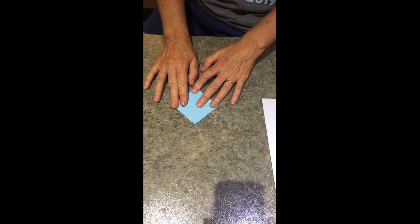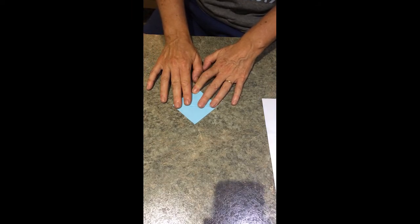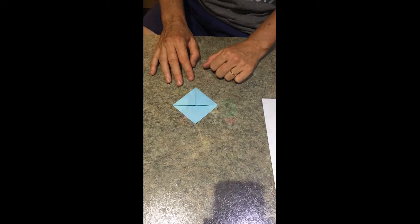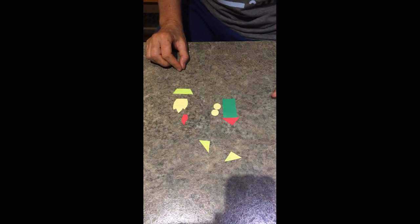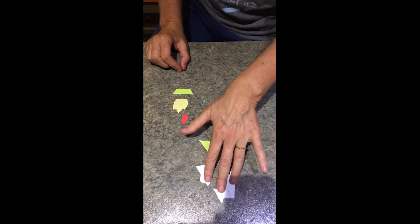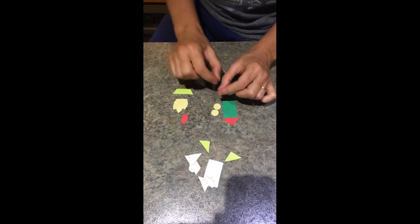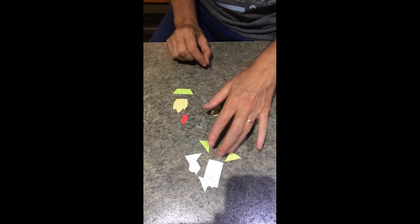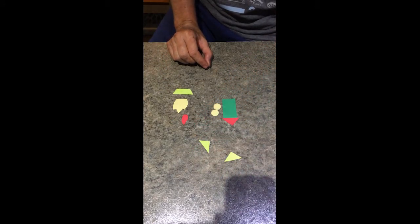You can set that aside while you use the template to cut out your rocket pieces. I have cut out the templates and then traced around them onto the colored paper and cut the colored paper out.